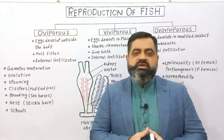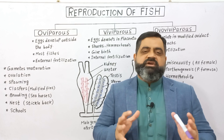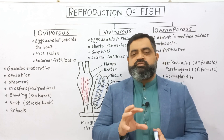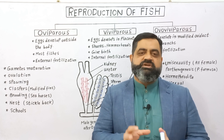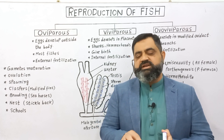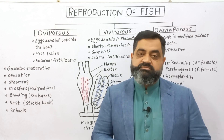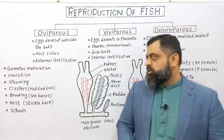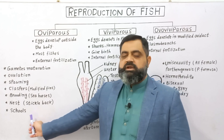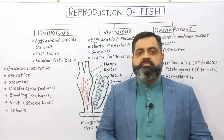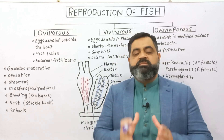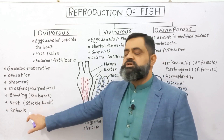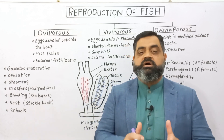The three-spined stickleback has a specialized behavior: during the breeding season, it makes a nest with stones or seaweeds where it lays a large quantity of eggs, and at the same time the male releases sperms to increase the chances of fertilization. Usually after eggs are laid and development has been completed, fishes live in a school — a school is a large group of fishes living together in the water.